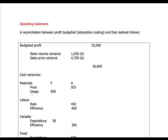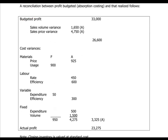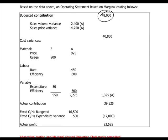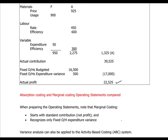An operating statement is a reconciliation of the budgeted profit — in the case of absorption costing — with the actual profit. You start with the budgeted profit, reconcile with all the variances calculated, and arrive at the actual profit. If using marginal costing, you start with the budgeted contribution and end with the actual contribution, and you will only recognise the fixed overhead expenditure variance — no efficiency variance, because you are not absorbing fixed overheads under marginal costing.